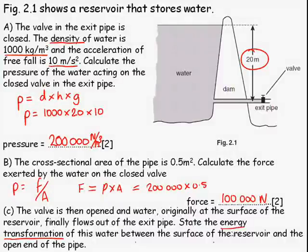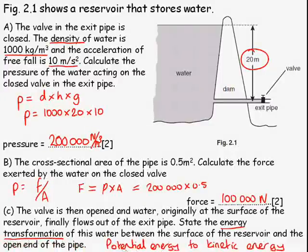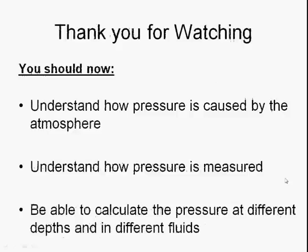Part C is just asking you to state energy transformation from the top to the bottom. So we start with potential energy, and we end with kinetic energy. Thank you for watching. You should now understand these three points. If you have any questions, please ask.